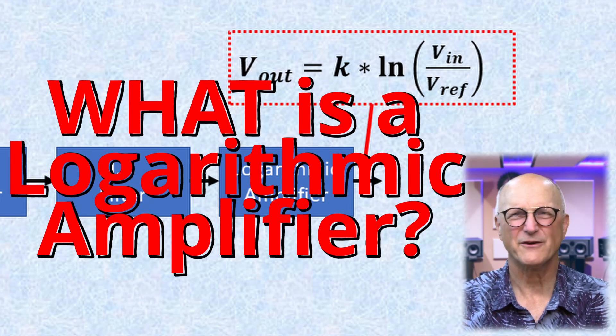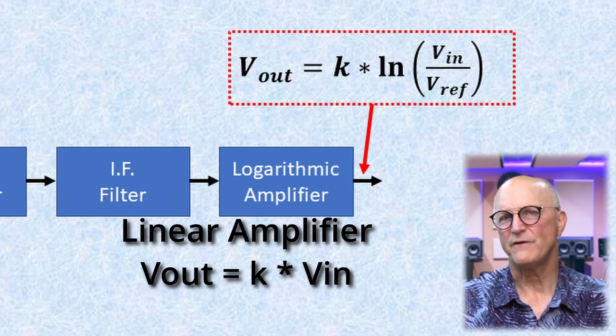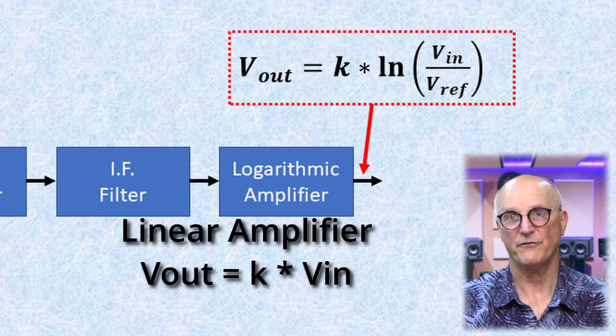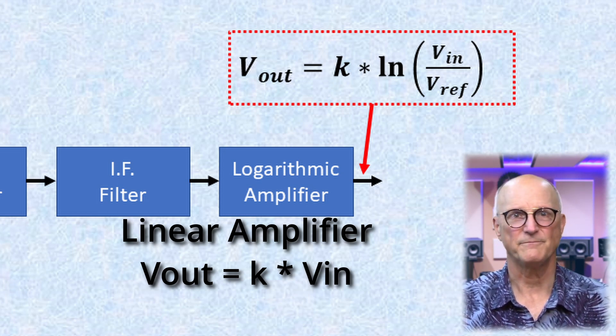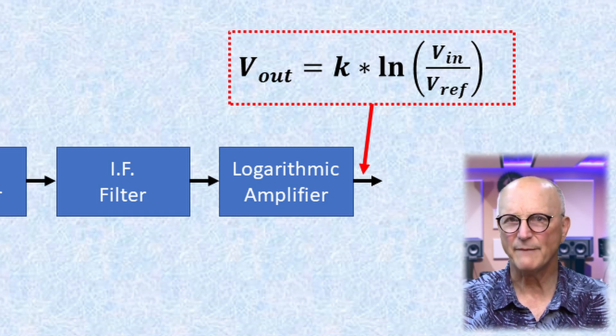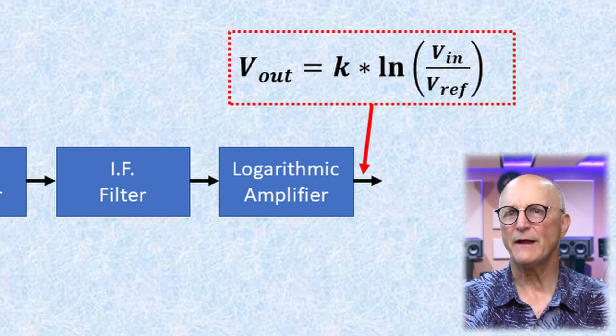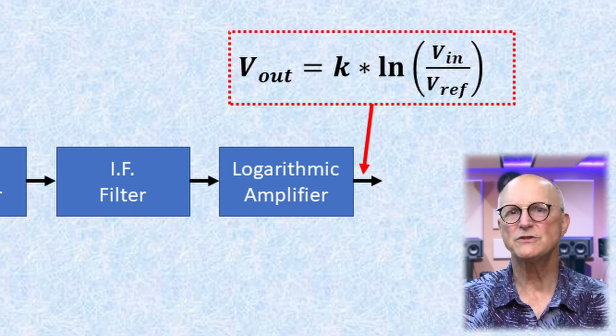A normal linear amplifier has an output which is strictly some constant, the amplification factor, times the voltage of the input signal. A logarithmic amplifier has an output which is a non-linear amplification factor that is dependent on the voltage of the input. Its output is some constant times the natural logarithm of the ratio of the input voltage divided by some voltage reference.